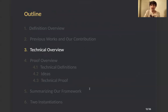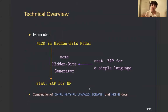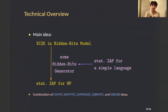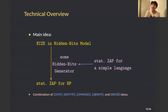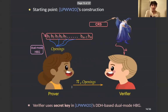For the technical overview, the main idea was to construct a statistical ZAP for NP from an unconditional NIZK in the hidden bits model. To do this, we needed a construction of a hidden bits generator. And to construct the hidden bits generator, we needed a statistical ZAP for a simple language. In other words, we start with a statistical ZAP for some simple language and bootstrap it to obtain a statistical ZAP for NP. Our starting point was the construction from a very recent work, which we call the LPWW construction.